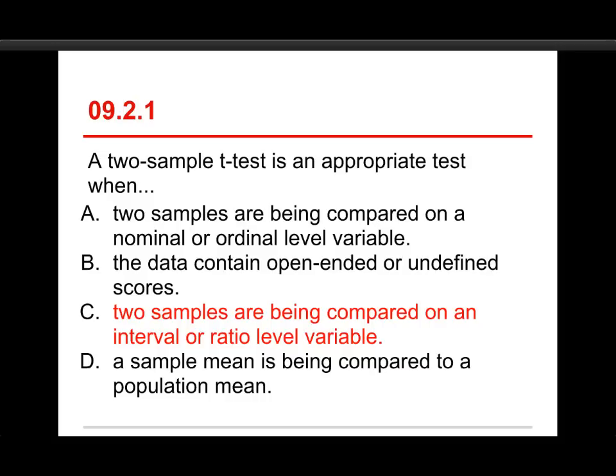Answer A, about nominal or ordinal level — you can't compute means in those cases, and you would want to use a chi-squared test, which we'll cover in Chapter 12. As for the data containing open-ended or undefined scores, that wouldn't work because you need to be able to compute means. And the last one — a sample mean being compared to a population mean — that's when you'd use a one-sample z-test or one-sample t-test, depending on whether you know the population standard deviation.